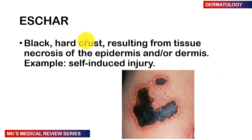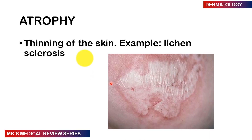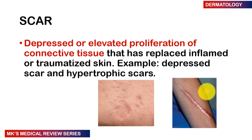An eschar is a black, hard crust resulting from tissue necrosis of the epidermis and dermis. It may be seen in self-induced injury and third-degree burns. Atrophy is simply thinning of the skin, seen in conditions like lichen sclerosus — where the affected area appears distinctly different from surrounding skin. A scar is depressed or elevated proliferation of connective tissue that has replaced inflamed or traumatized skin. Scars may be depressed or elevated; elevated scars are hypertrophic scars.